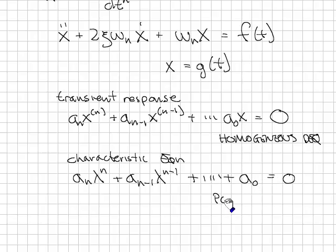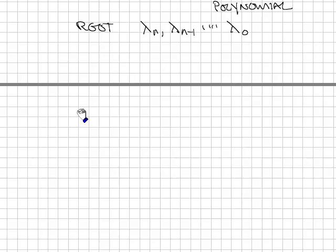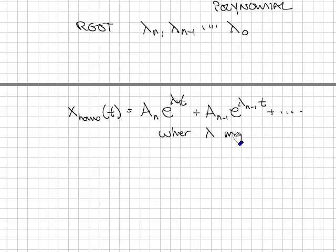This is a polynomial. The roots of the polynomial are lambda_n, lambda_(n-1), and on down. And the roots of the characteristic equation can be used to find the transient response of the system. The transient response has the form: x_transient of t equals A_n e^(lambda_n t) plus A_(n-1) e^(lambda_(n-1) t) plus and so on.